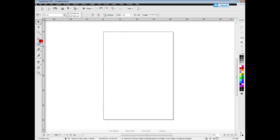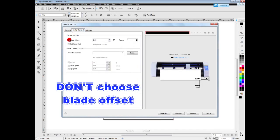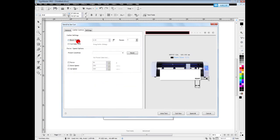Now let's tap Skycut here and send to cutter. Here you should pay attention: don't choose blade offset. Click cut long.